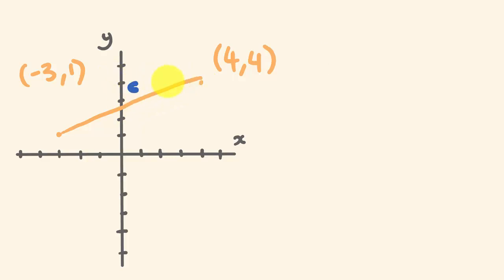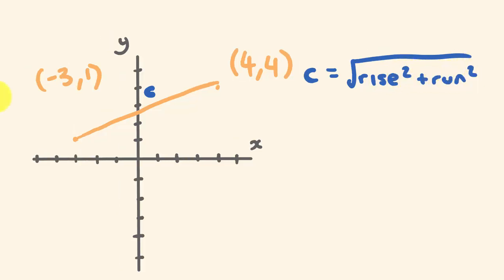To work this out, we're going to go c is equal to the square root, see if you can remember this, of the rise² plus the run². So how far have we gone up here? This is this distance here. We have gone from 1 to 4, okay, so we've gone up 3. Our rise is 3, which we're going to square.